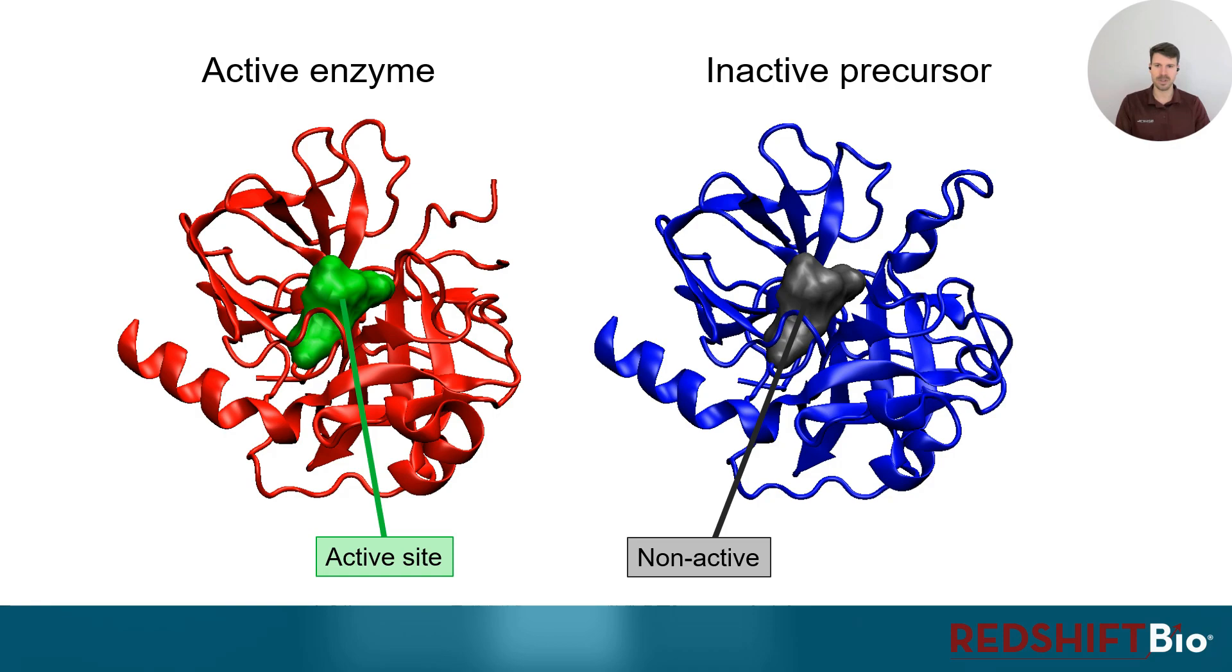Actually the two proteins we're looking at here are two forms of protease produced in our body, namely alpha-chymotrypsin and chymotrypsinogen. So again what we know is that in the human body alpha-chymotrypsin is an active enzyme whereas chymotrypsinogen is inactive.